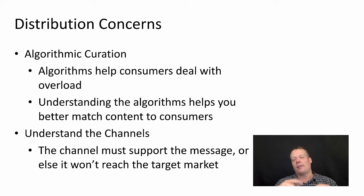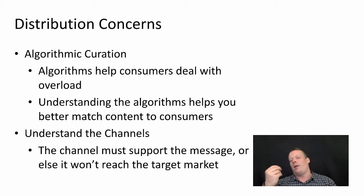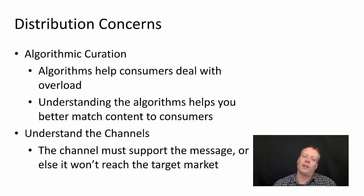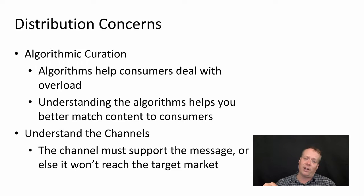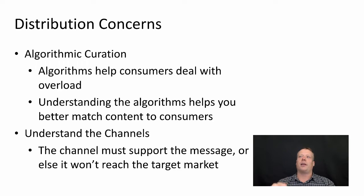When thinking about distribution, you need to consider a couple of things. One is algorithmic curation — on YouTube, for instance, the videos first shown to an individual when they log on are recommended to them. So you need to think about what kinds of videos you could create that might get recommended to the potential consumers you're trying to reach. Understanding the algorithms of whichever platform you're on can help with that. You also need to understand the channel, because the channel has to support the message — if your target market isn't on that particular channel, it's probably not a good way to go.